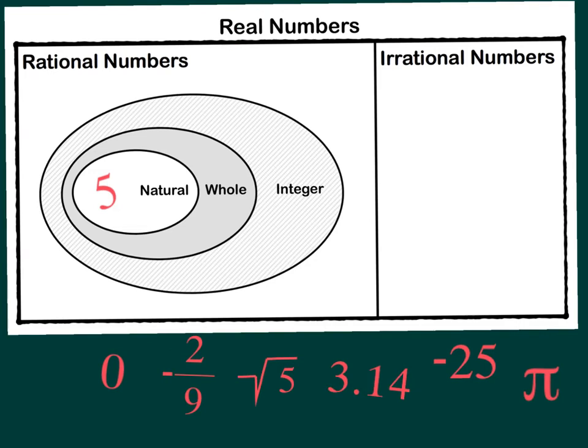Remember you don't need to write a number repeatedly in a Venn diagram. By placing the 5 in this spot right here it is all those different classifications. We need only write that 5 one time.